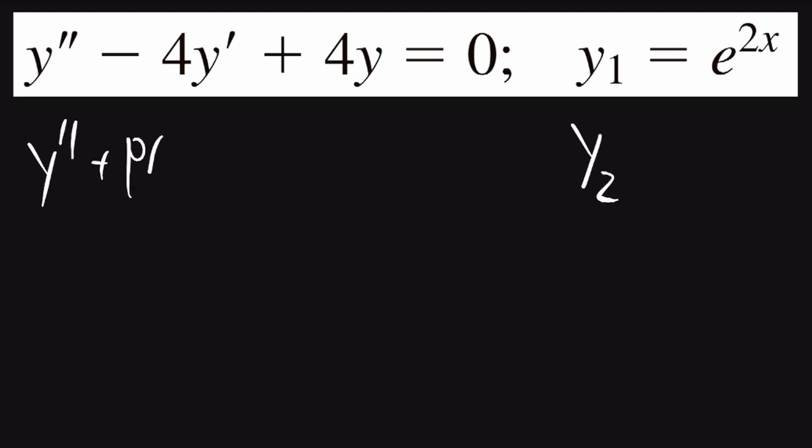It's already in the standard form of y double prime plus p of x times y prime plus q of x times y is equal to 0.